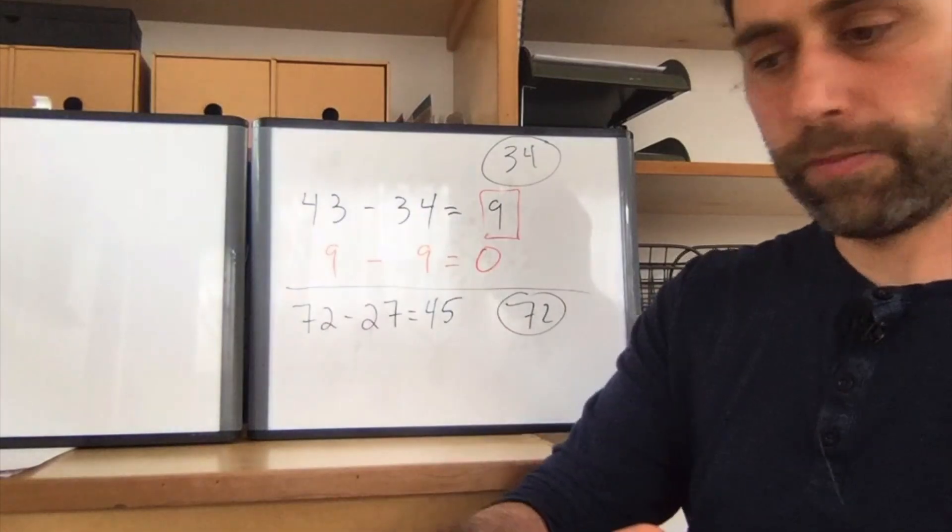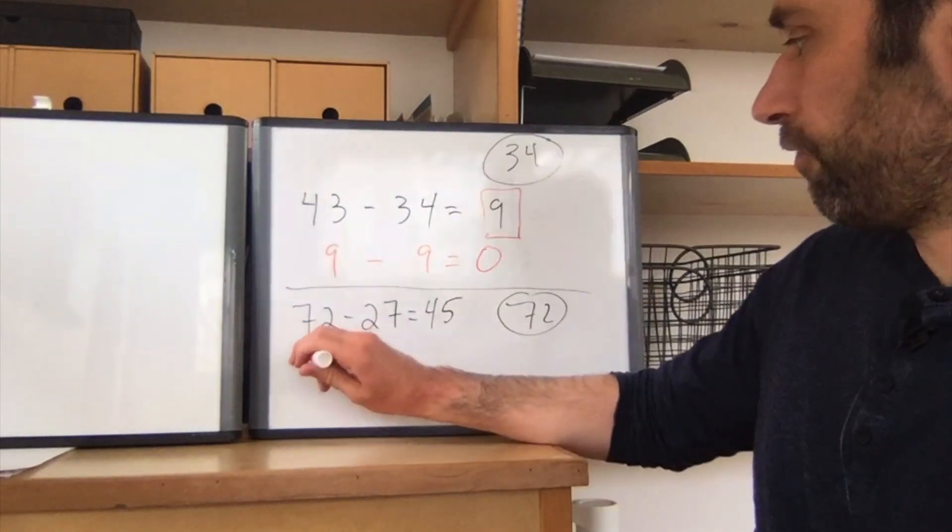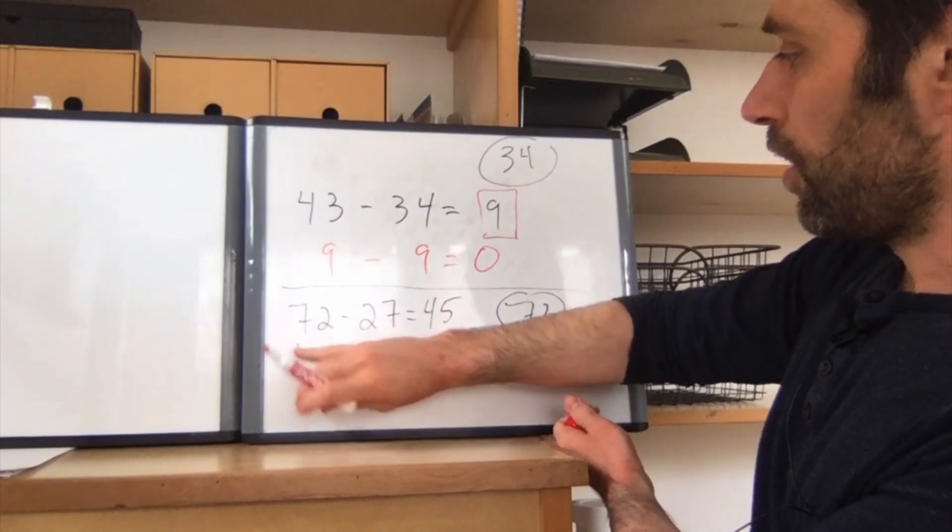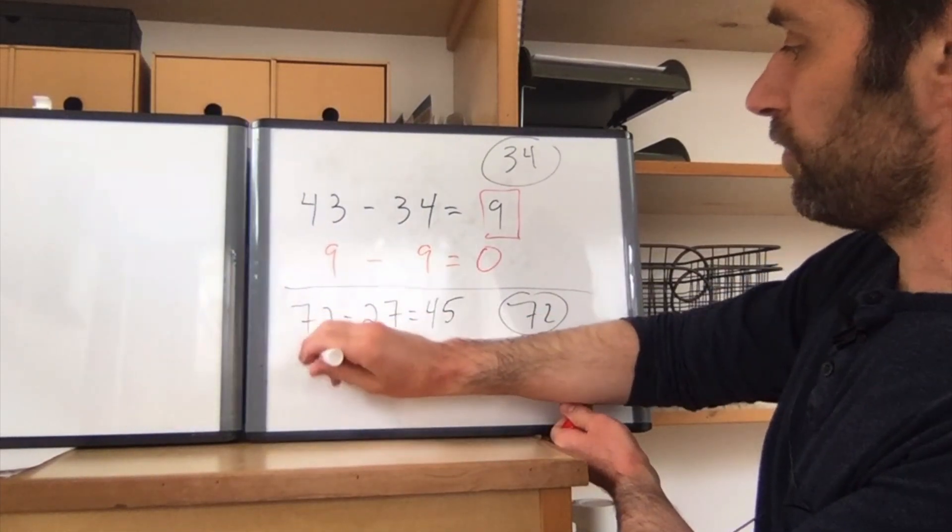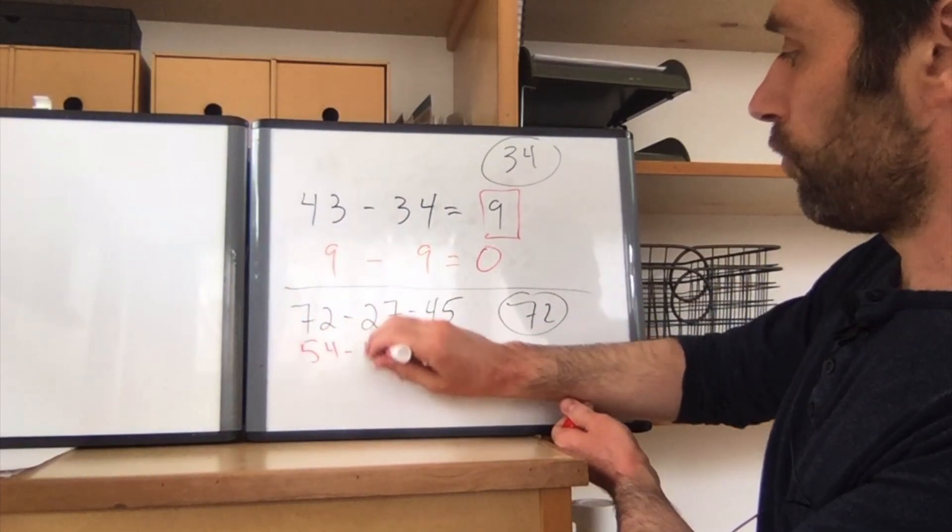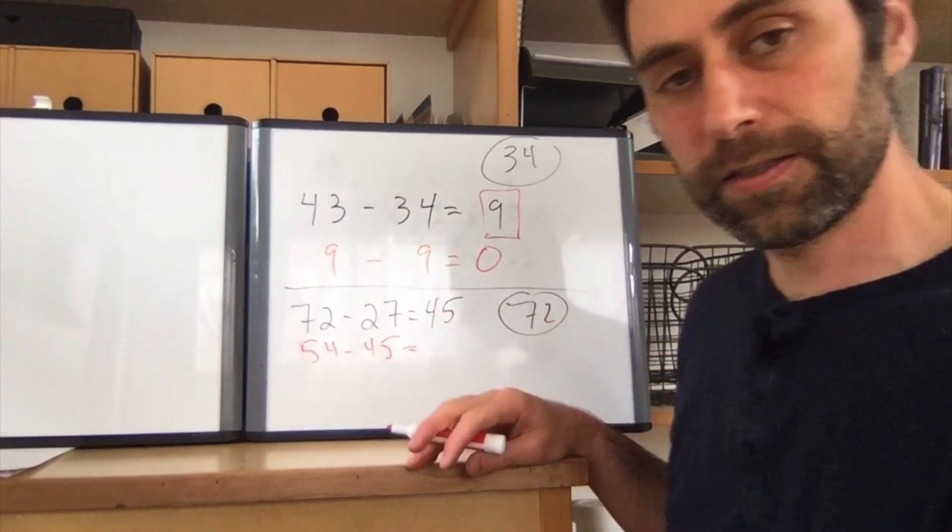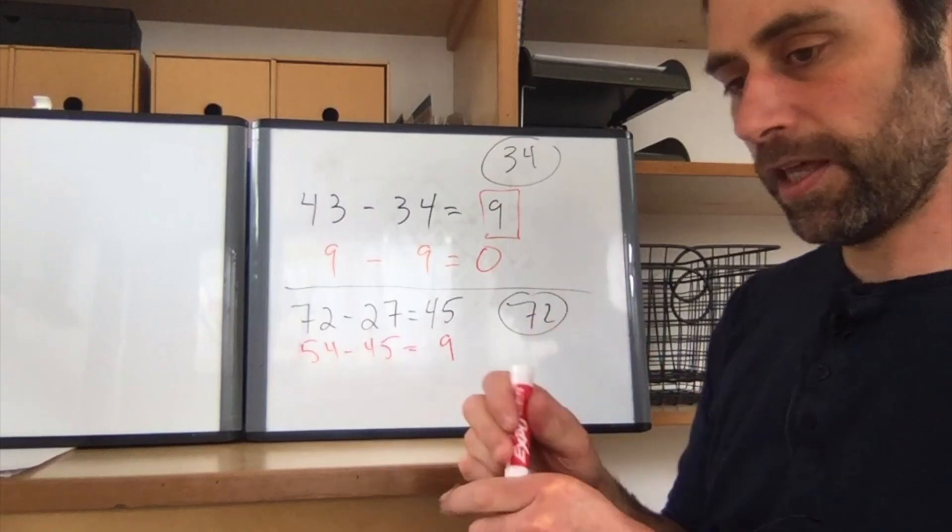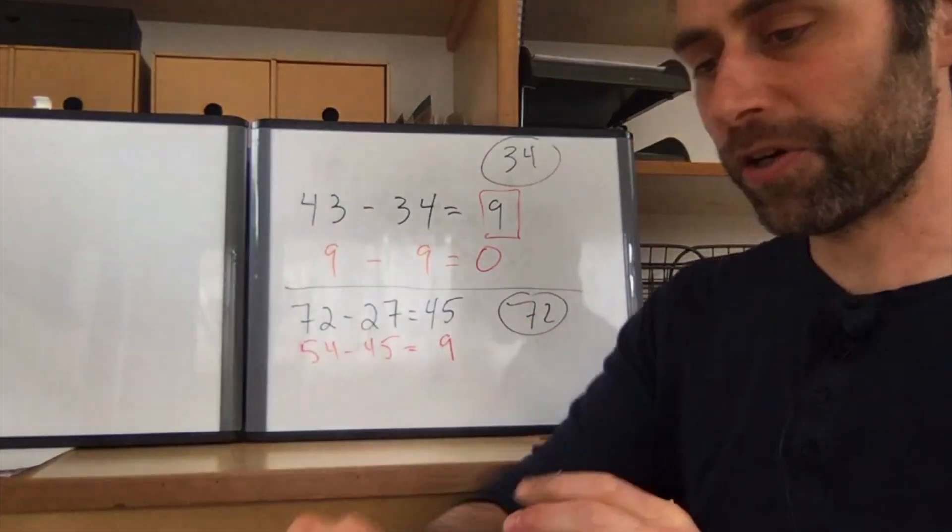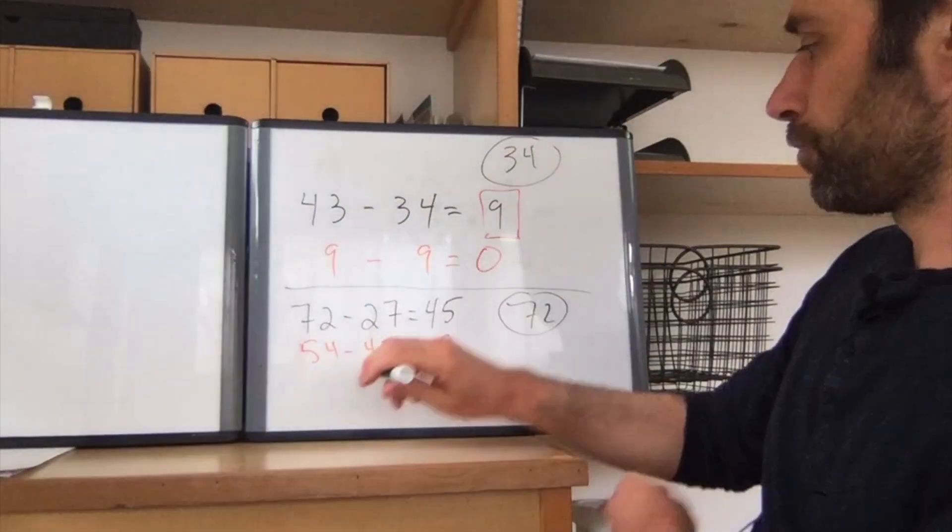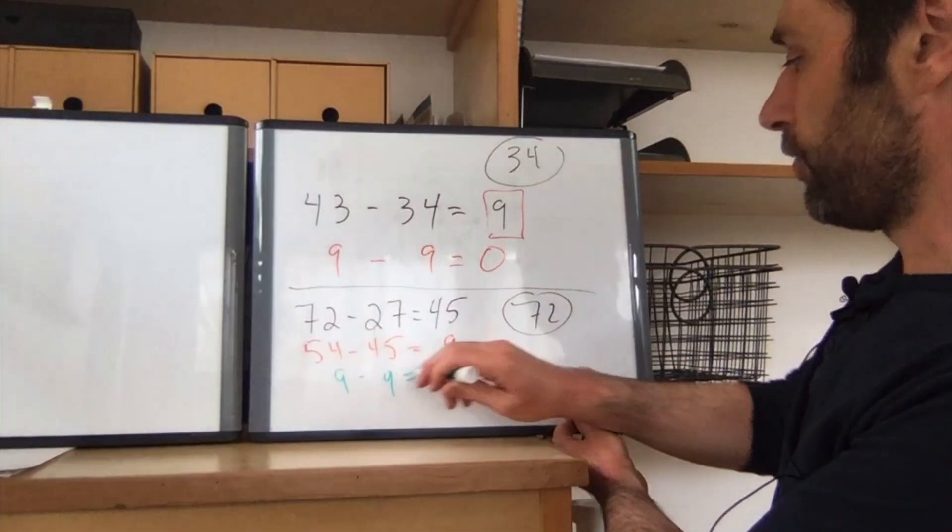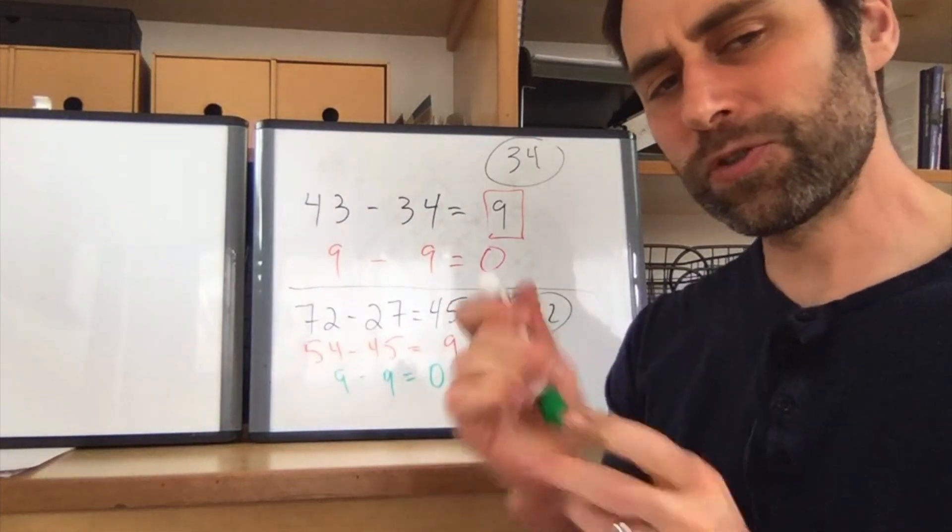And then I'll go to my second color. 45. Let's keep that up. 45. Well, I want to do the big one first. So 54 minus 45 is, that's actually kind of interesting, it's 9. And then I'll go to another color. 9 minus 9 again is 0. And once again I'm done. That's kind of interesting.